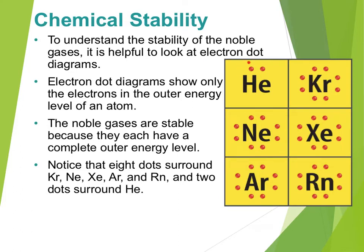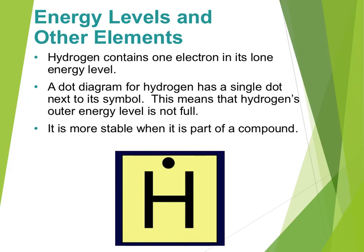Helium with two electrons has a complete outer shell because helium can only hold two, but most other things want eight. Notice how as you go from helium to neon, argon, krypton, xenon, radon — all have eight dots around them. This means they have a completely full shell. Hydrogen only contains one electron; the first shell wants two, so if hydrogen already has one and it wants two, it's going to want a second one. Hydrogen is not full. Hydrogen is more stable when it is part of a compound because now it will fill up and essentially get a second dot in one way or another.